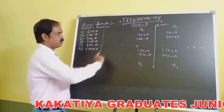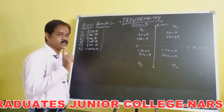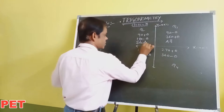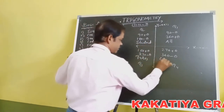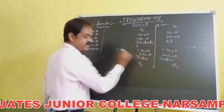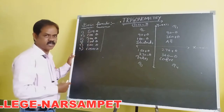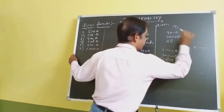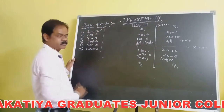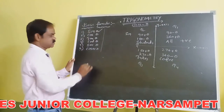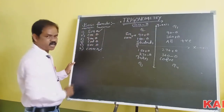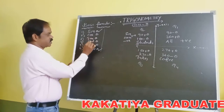In the first coordinate, all ratios are positive. We can remember this using the sentence: 'All Students Take Coffee.' 'All' means all six ratios are positive in the first coordinate. 'S' stands for sin — so sin and its reciprocal cosec are positive in the second coordinate. The remaining four — cos theta, tan theta, cot theta, sec theta — are negative in the second coordinate.